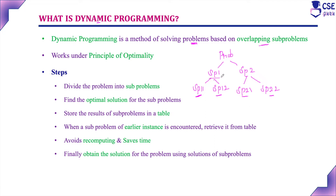If subproblem 1 and subproblem 2's subproblem are similar, find the solution for whichever we encounter earlier. Suppose we first encounter subproblem 2's subproblem — find the solution and store the result in a table. Then, whenever we encounter subproblem 1, since subproblem 1 and subproblem 2's subproblem are similar, instead of recomputing, use the result of subproblem 2's subproblem — no need to recompute again.